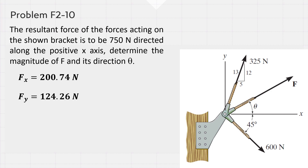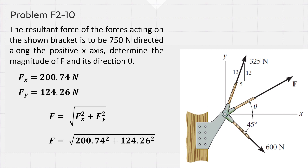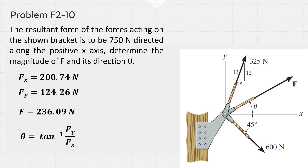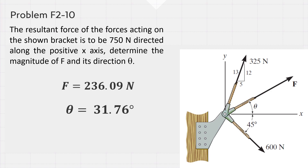Substituting these values into the two equations and solving for Fx and Fy gives Fx equals 200.74 newtons and Fy equals 124.26 newtons. To find the magnitude of F, applying the Pythagorean theorem: F equals the square root of Fx squared plus Fy squared equals 236.09 newtons. The angle θ equals tan inverse of Fy divided by Fx equals tan inverse of 124.26 divided by 200.74 equals 31.76 degrees. So, the magnitude of F is 236.09 newtons and its direction is 31.76 degrees measured counterclockwise from the positive x-axis.